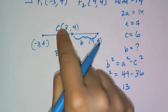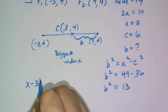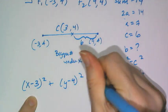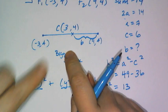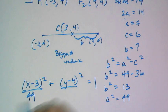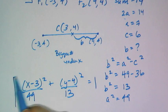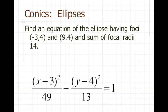Now I write the equation. Since the center is not the origin, I write it like a circle by putting the center in parentheses with x and y. The bigger number, a squared which is 49, goes under the x term, and 13 goes under the y term. That's the equation of my ellipse. Once again, remembering b squared equals a squared minus c squared was the key to making writing this equation super easy.